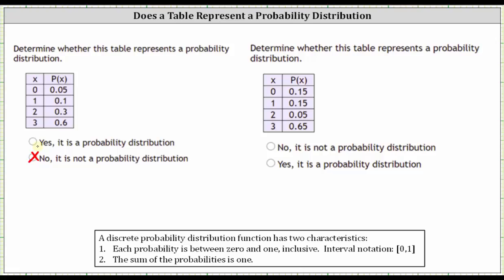And now checking the second table, once again, notice how the four probabilities are in the closed interval from zero to one. So the second step is now to check the sum.